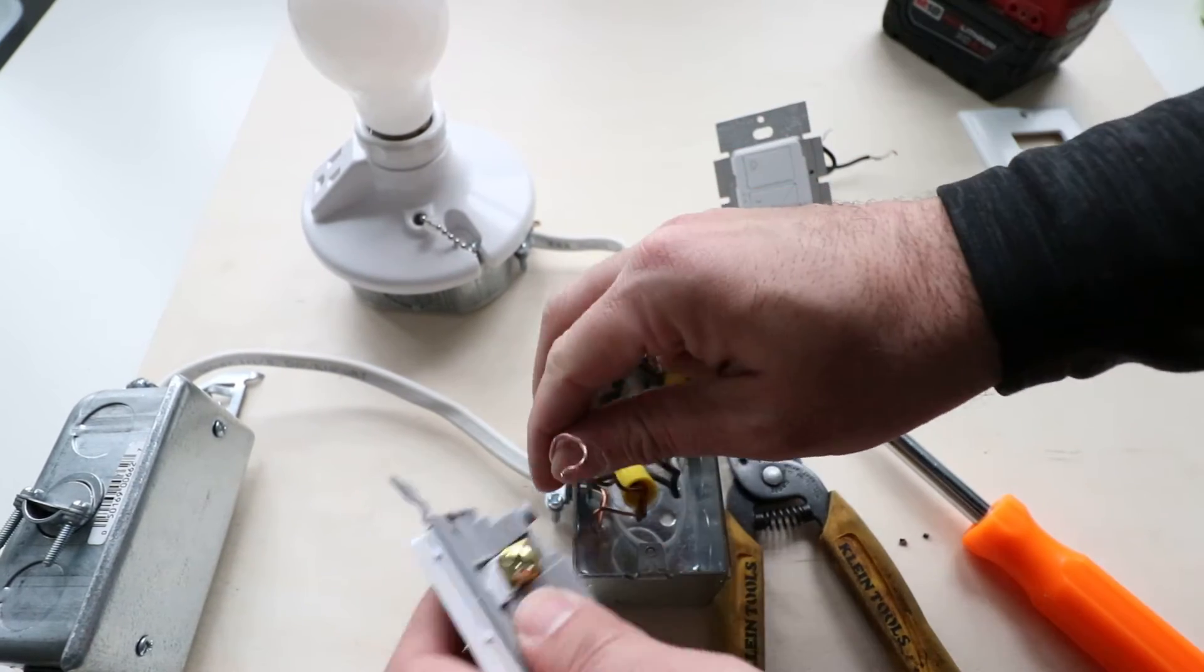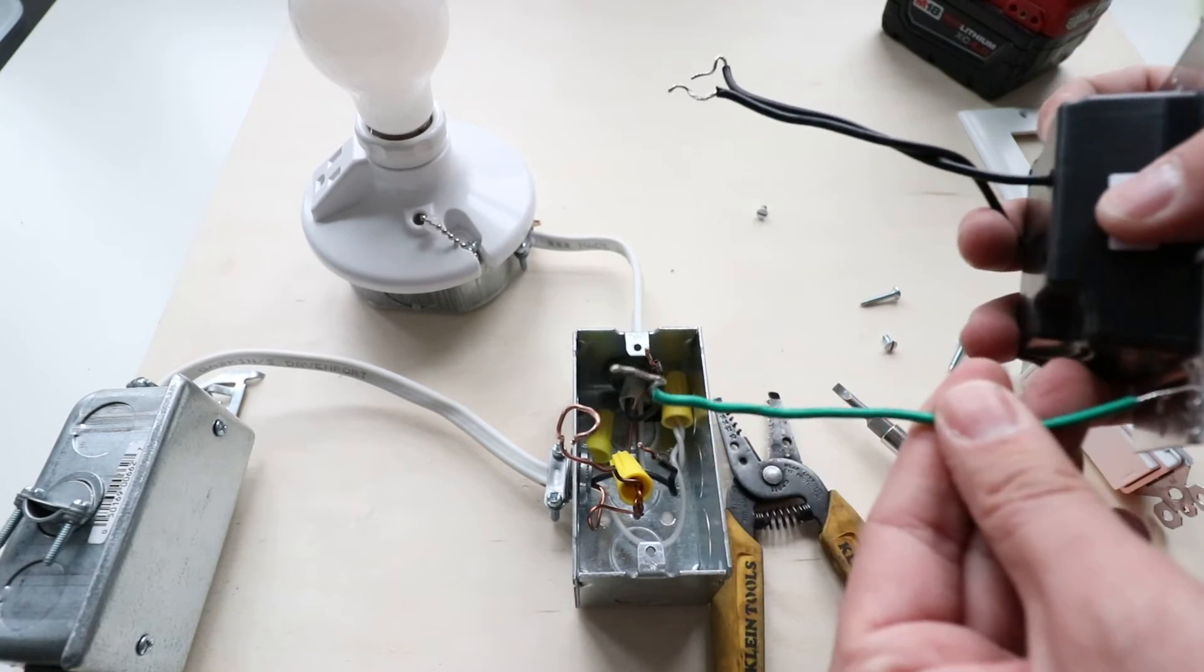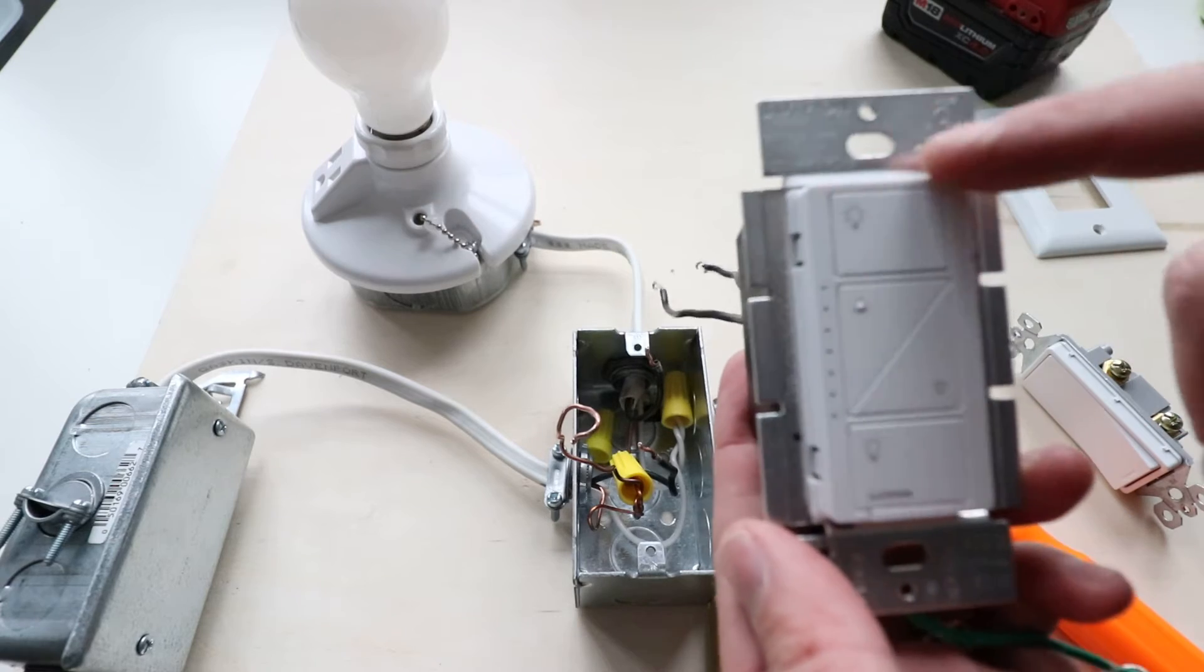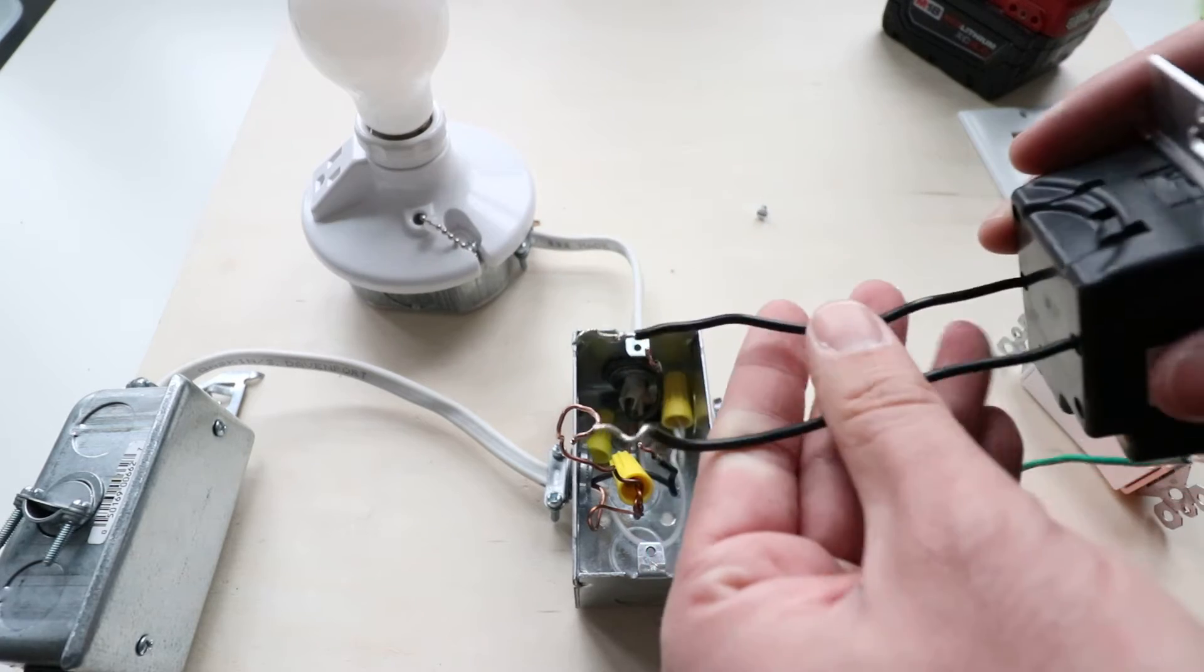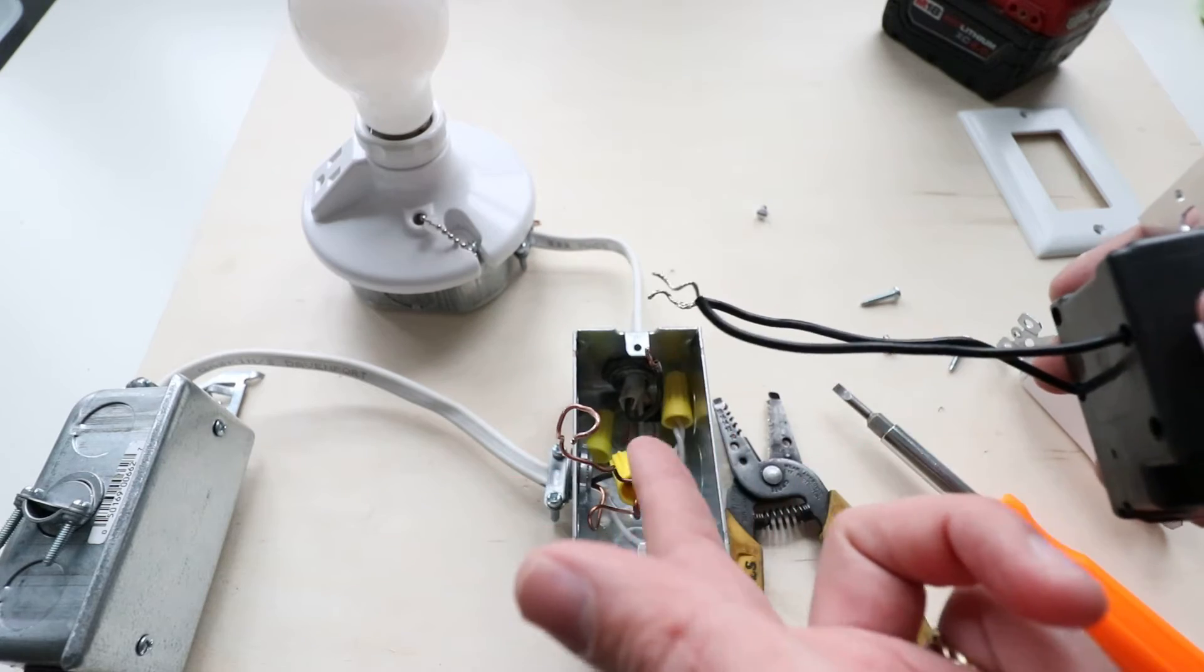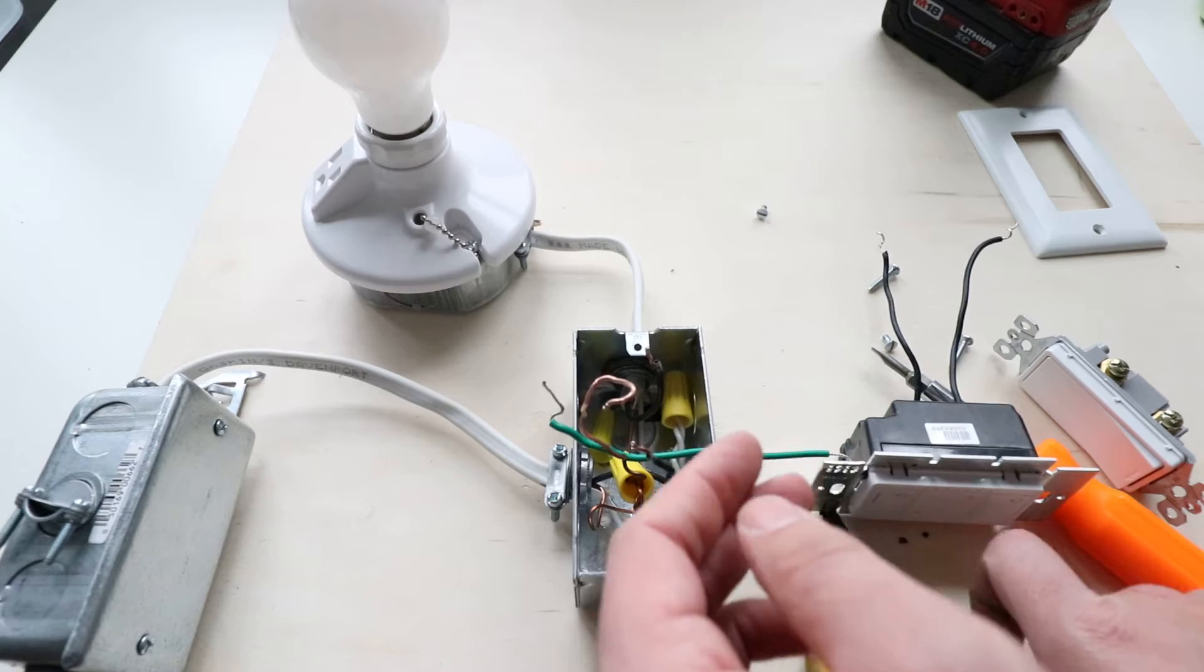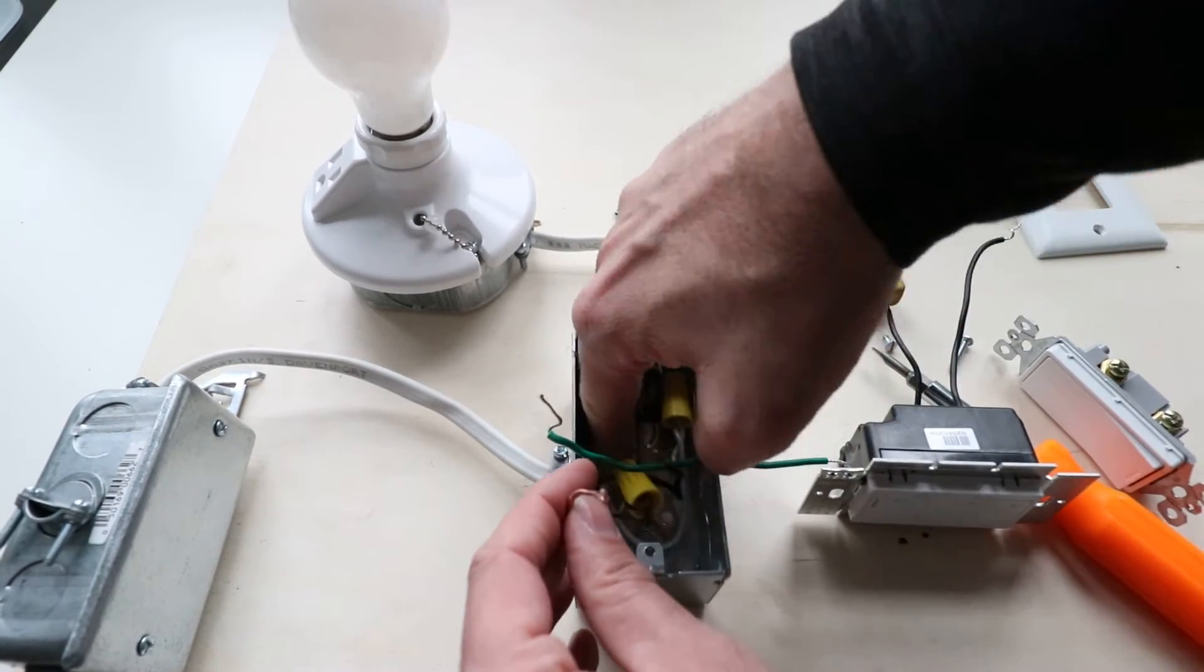We're going to get started wiring in our new dimmer switch. It does not require neutral. You can see all it's got on the back here is a ground wire and two wires, a hot and a load wire. What's nice about these Lutron Caseta light switches—we'll include a link below, please click on that, it helps support the channel—is it doesn't matter if you wire it to hot or load. As long as you wire one to load and one to hot, you can't get this wrong, you can't reverse it. We're just going to straighten out this ground wire a little bit so it can be inserted better into a wire nut.